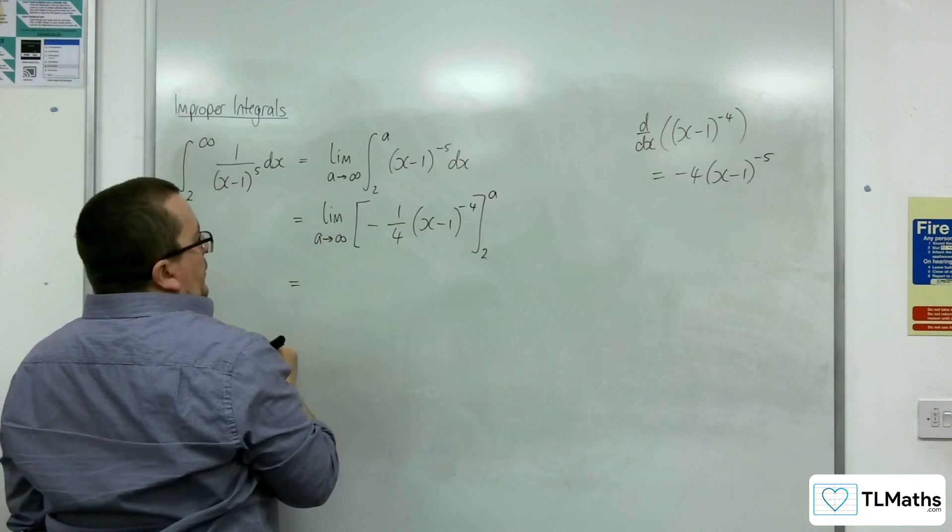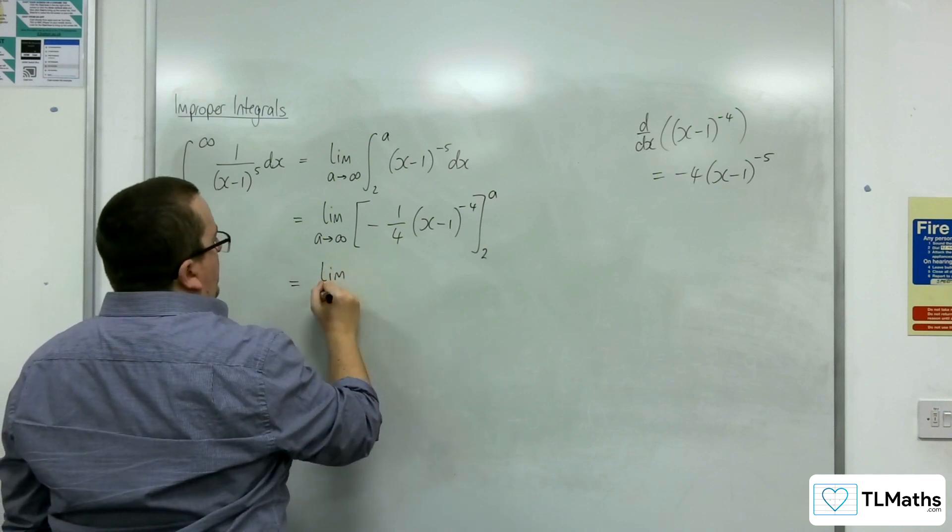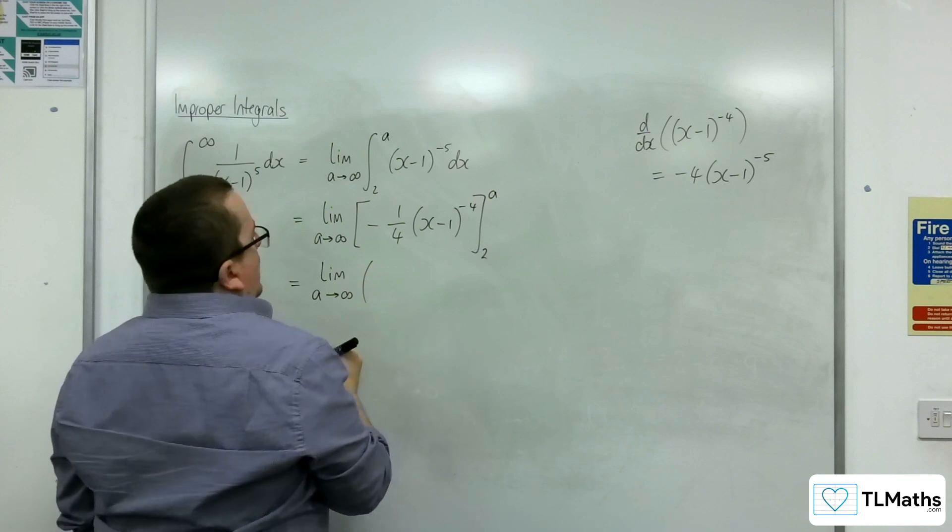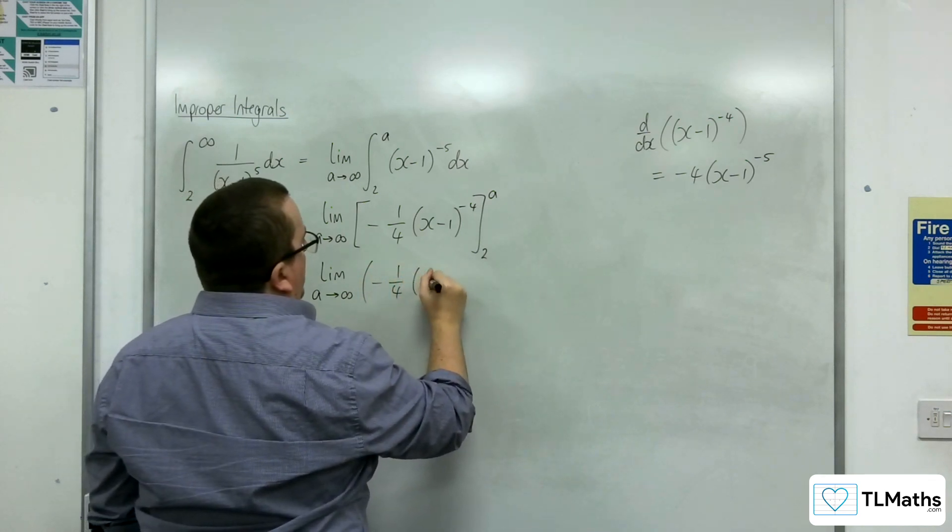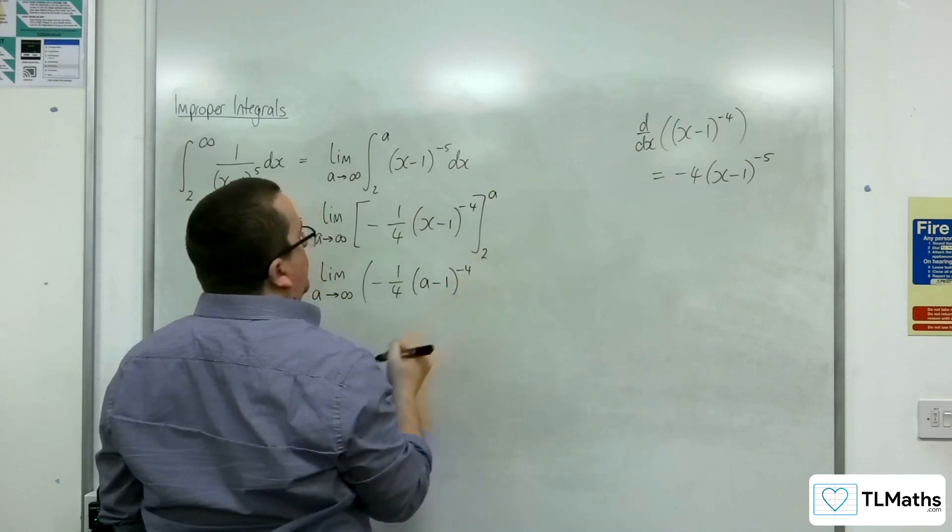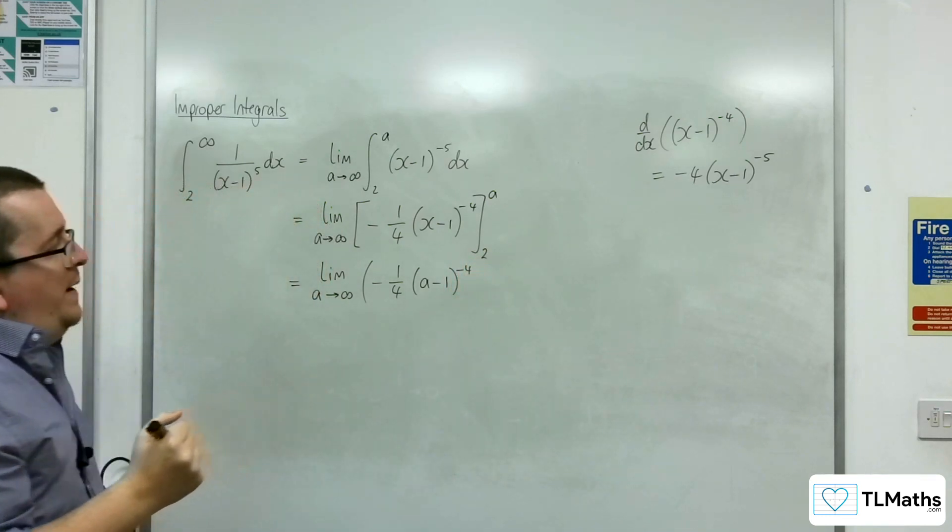So this is equal to the limit as A tends to infinity. Substitute in the A, we're going to get minus 1 quarter, (A minus 1) to the minus 4. And then substitute in the 2.